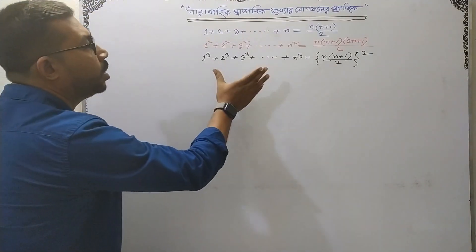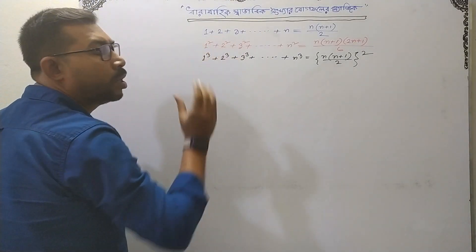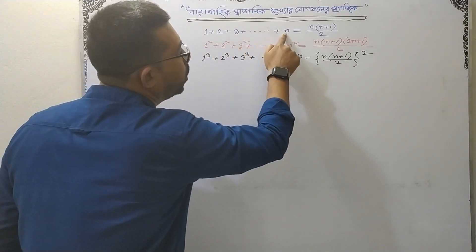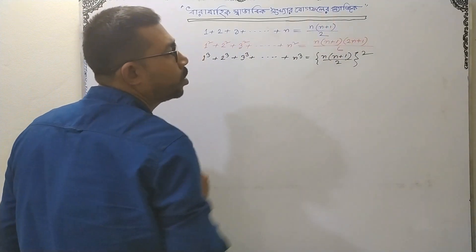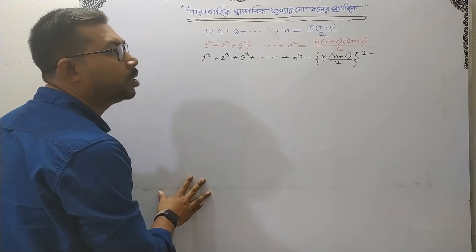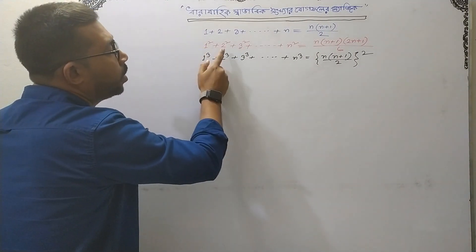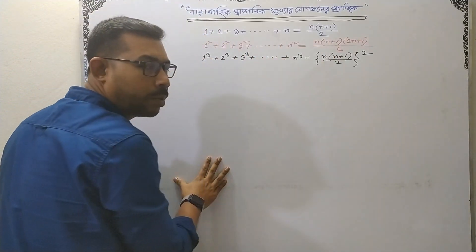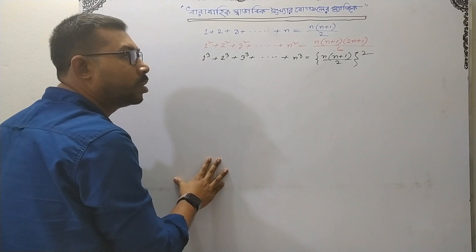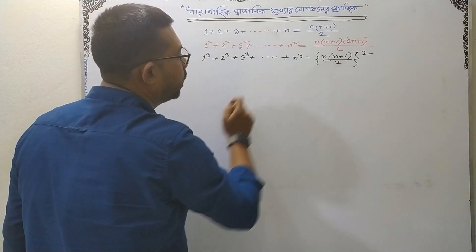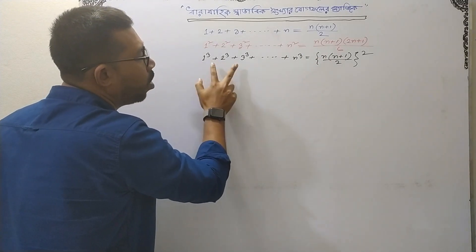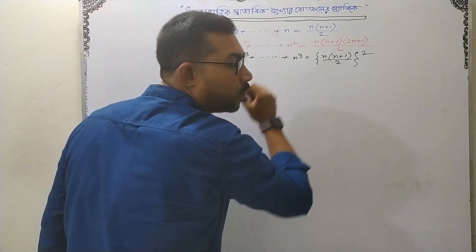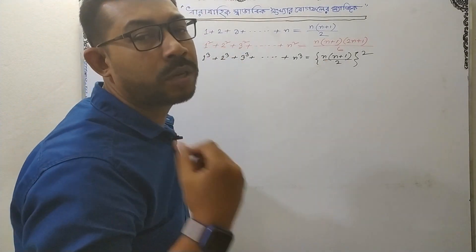Very few of you understand n into n plus 1 divided by 2. And if you see n into n plus 1 divided by 2, what do we need to do with n into n plus 1 into 2n plus 1 divided by 6? So what do we need to do with n into n plus 1 into 2n plus 1 divided by 6?